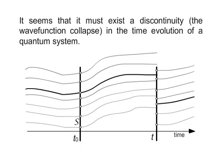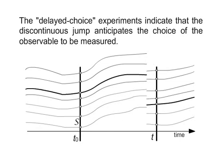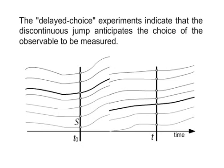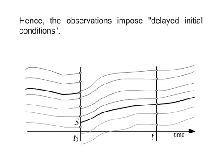It seems that there must exist a discontinuity — the wave function collapse — in the time evolution of a quantum system. The delayed-choice experiments indicate that the discontinuous jump anticipates the choice of the observable to be measured. Hence, the observations impose delayed initial conditions.